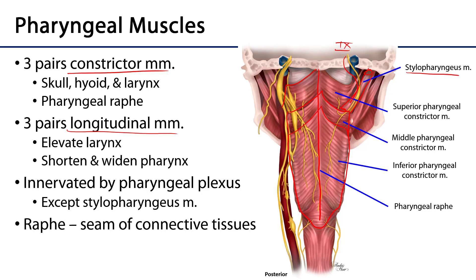All of these muscles are innervated by the pharyngeal neural plexus except the stylopharyngeus. The stylopharyngeus muscle is one of the glaring exceptions to the rule of the pharyngeal plexus — it is completely innervated by the glossopharyngeal nerve.